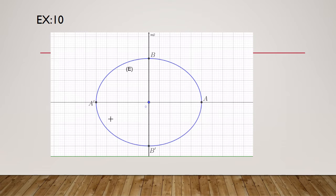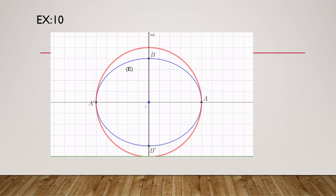First, we have A and A'. O is the midpoint of AA', so we get the center of the ellipse. Now we want to locate the point Q. We proved that Q belongs to the auxiliary circle, so we draw the auxiliary circle — the circle of center O and radius OA. Q is a point on this circle, but we cannot specify its exact position yet.